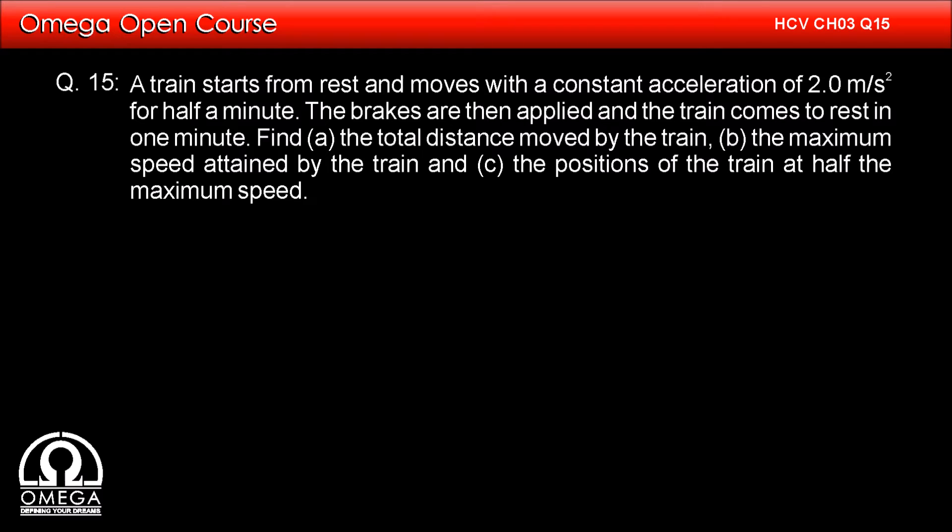Find: a) the total distance moved by the train, b) the maximum speed attained by the train, and c) the positions of the train at half the maximum speed.